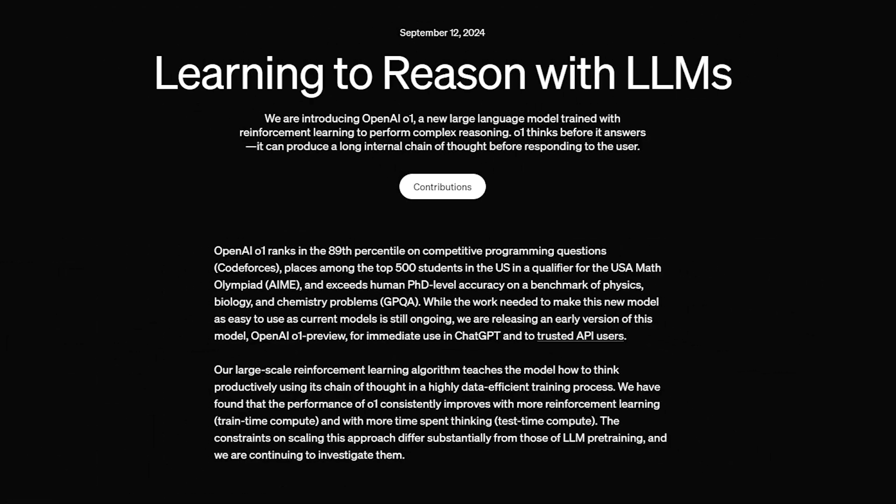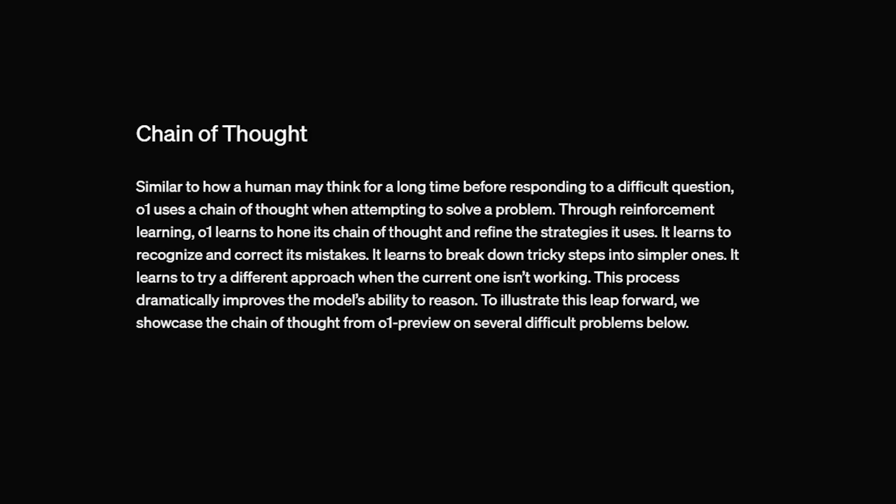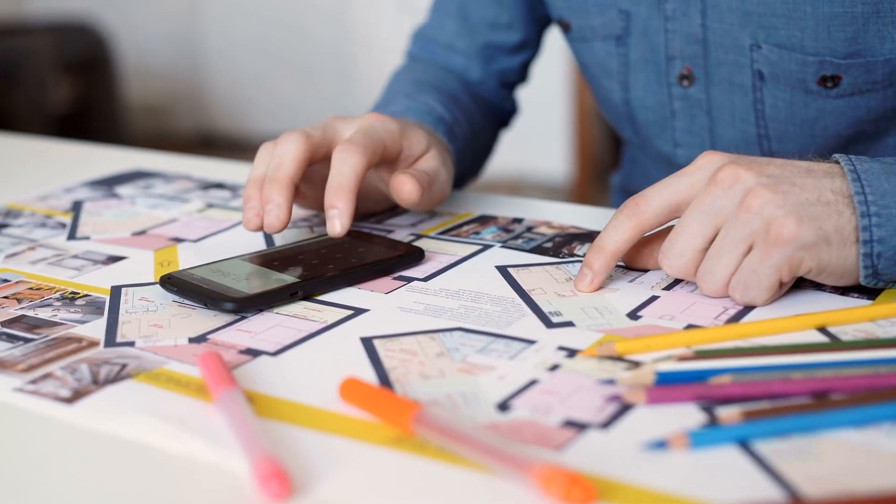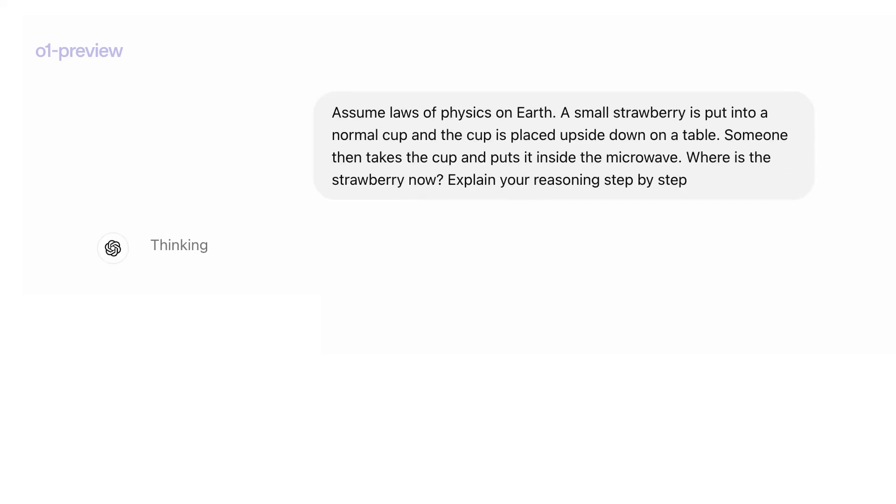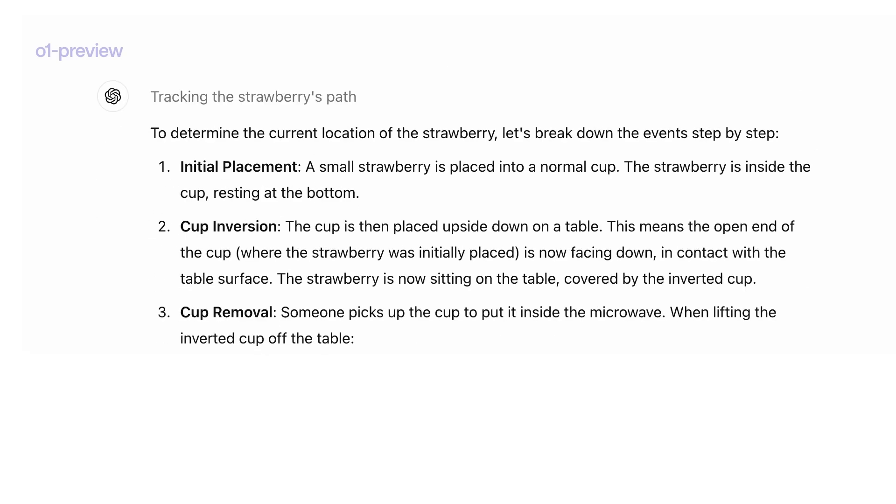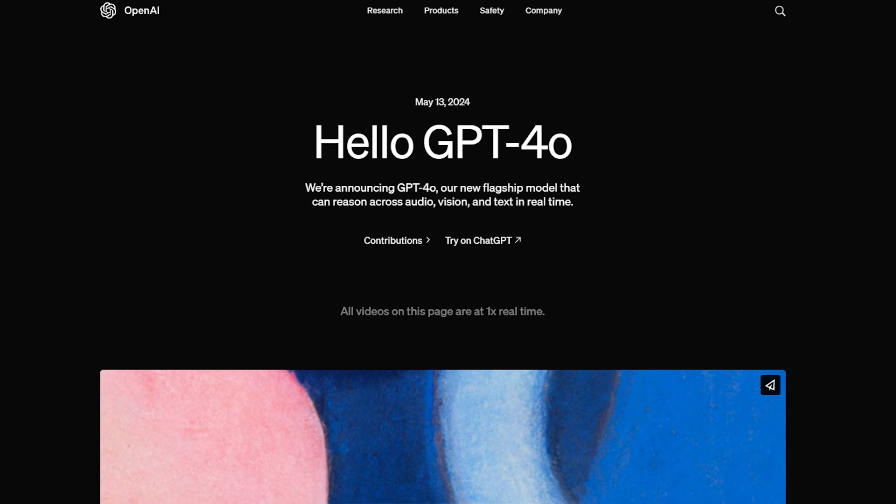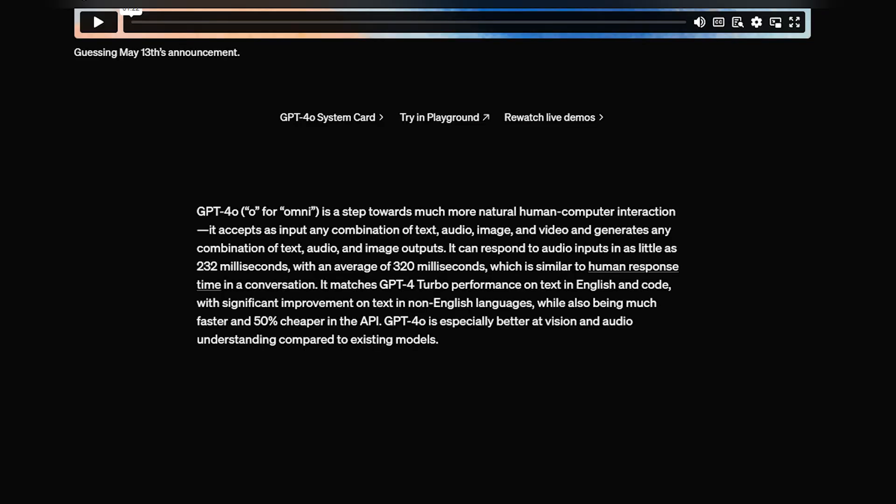If you're diving deep into a project that requires complex reasoning, like a research paper or a tough engineering problem, GPT-01 is your go-to. It's worth the extra time and cost for those kinds of tasks. But for general-purpose AI, GPT-40 is the clear winner. It's faster, cheaper, and super versatile for day-to-day tasks.